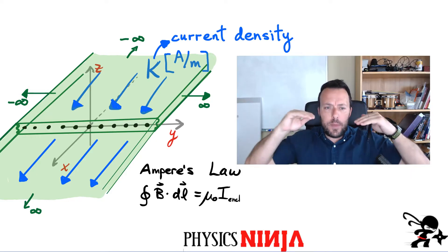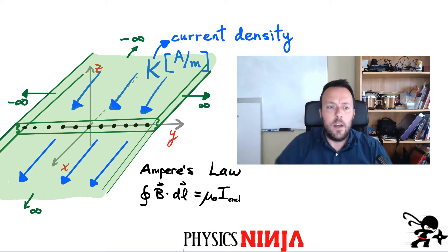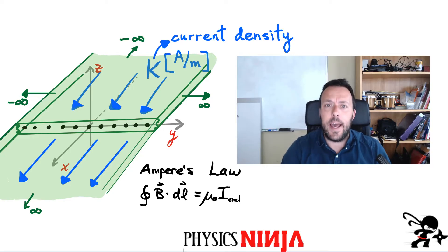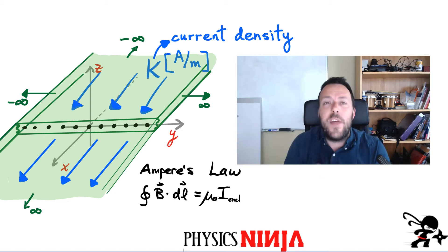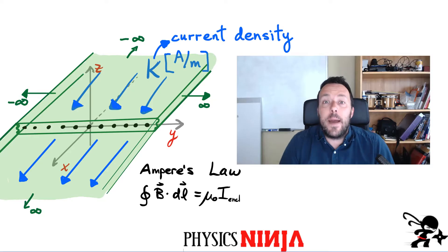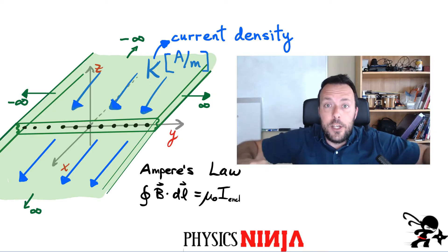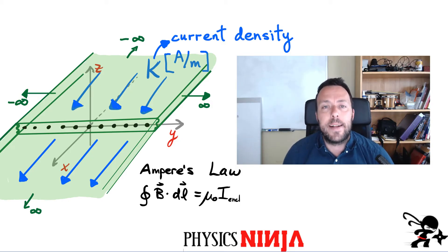We're going to assume we have this green two-dimensional piece of metal carrying a current — in this case flowing in the positive x direction. There's a current density defined using the letter K, which is the amount of current per unit length of width of that particular current sheet. The question is how do you apply Ampere's law to find the magnetic field? This is similar to finding the electric field produced by a 2D sheet using Gauss's law, though there are some differences because we're looking at magnetic field.